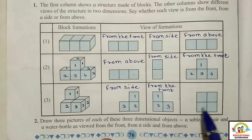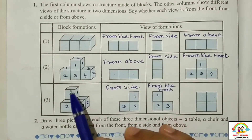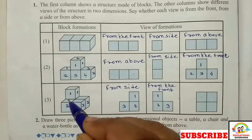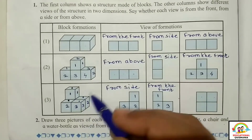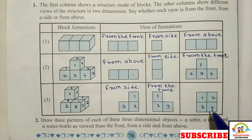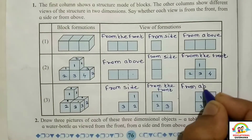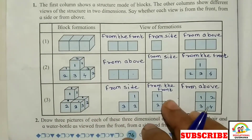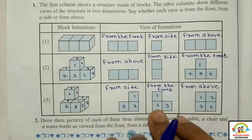Here are four boxes. There are three boxes. One, two, three, four — here are four boxes. This one is from above. So in this block formation, you can identify the view from above.